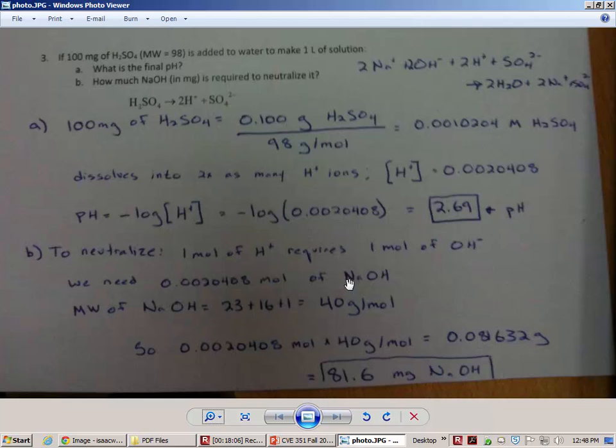We need to have that same number of moles of OH to cancel it out, to neutralize it. Here in the solution, you can see we need 0.0020408 moles of sodium hydroxide. Do the same thing as we did here to find the molecular weight. You go to sodium, which is 23, oxygen 16, hydrogen 1, adding it all up is 40 grams per mole. So you just multiply the molecular weight by the number of moles that we need, and then that tells you the grams. And then multiply by 1,000 to get milligrams.